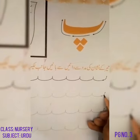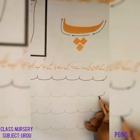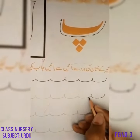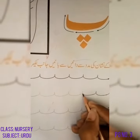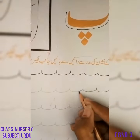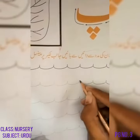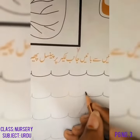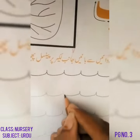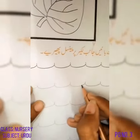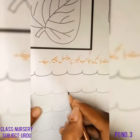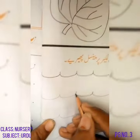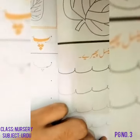Dot से tracing start करनी है — बिल्कुल lines के बाहर नहीं जानी चाहिए। जैसे मैंने tracing की है, वैसी tracing करो — बिल्कुल भी out नहीं होनी। Pe की ऐसी tracing करो, Pe से पढ़ा भी।